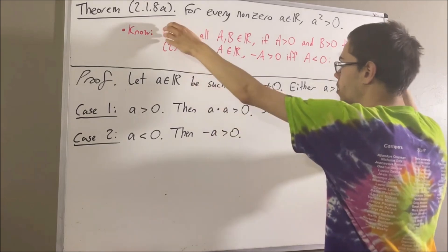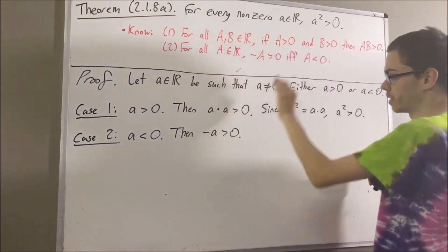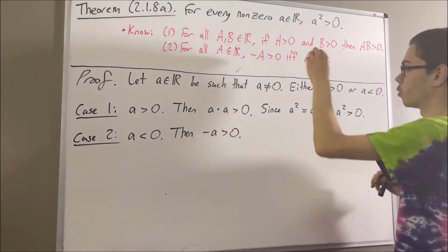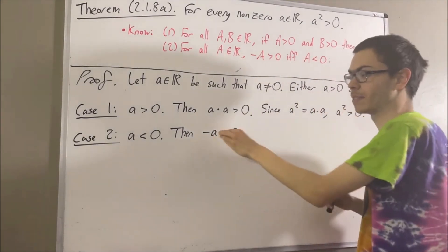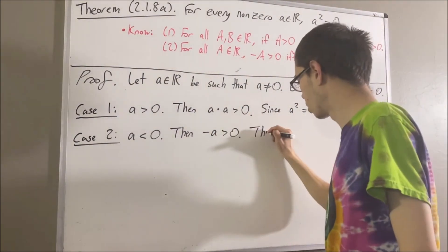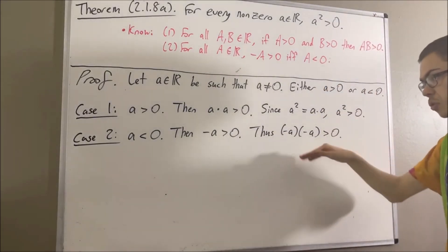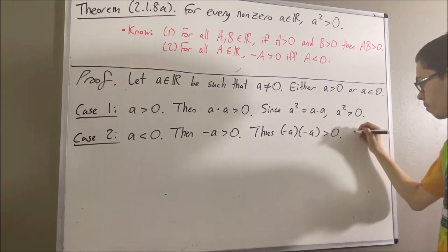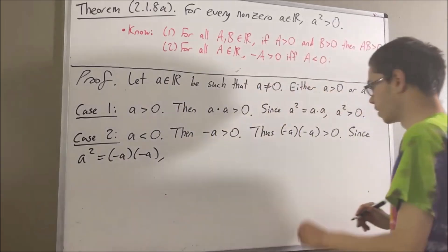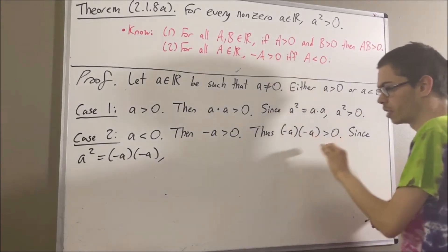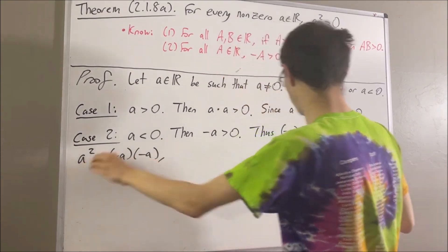Now applying fact number one, if we take capital A to be negative a and capital B to be negative a, then capital A times capital B equals negative a times negative a, which is greater than zero. However, a squared is equal to negative a times negative a. So, since negative a times negative a is greater than zero, and a squared equals negative a times negative a, we have that a squared is greater than zero.